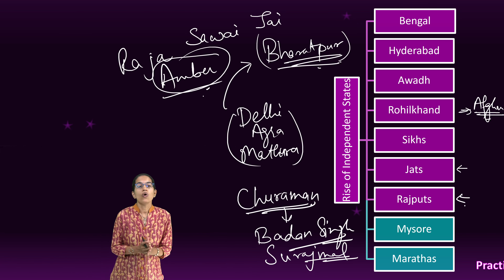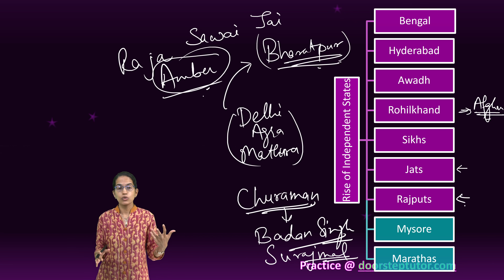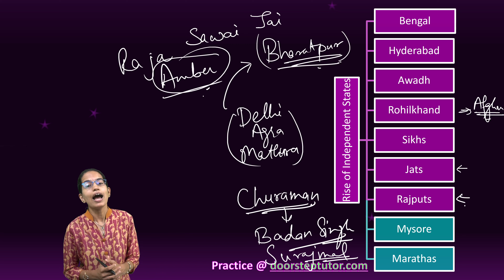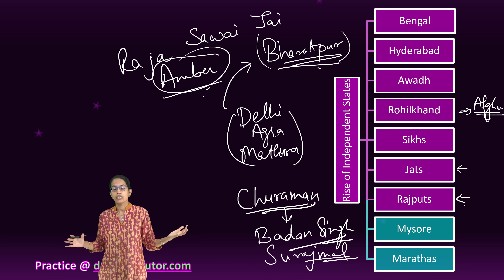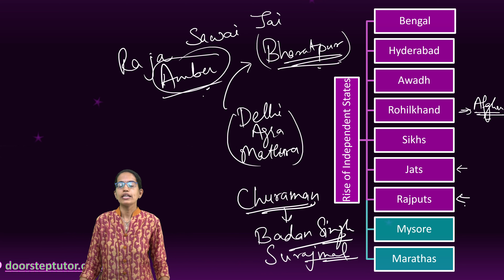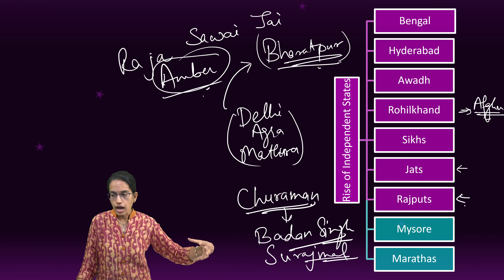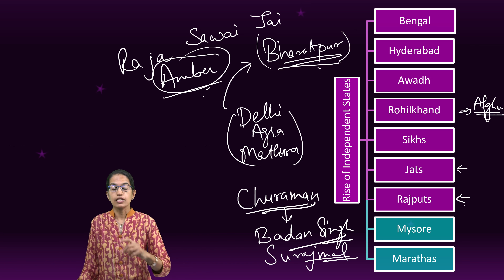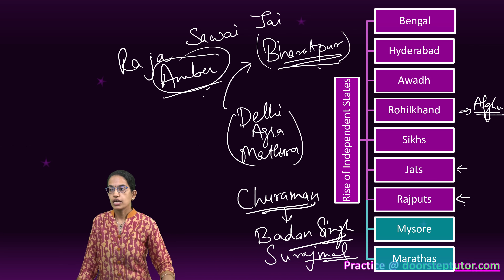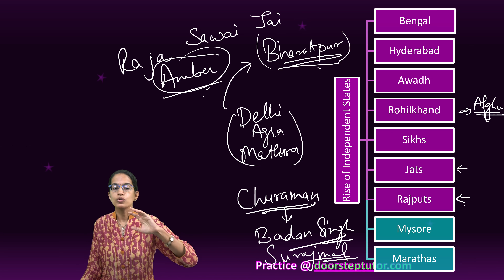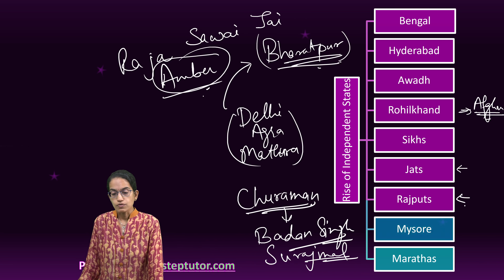Raja Jai Singh was exceptionally good as a social reformer and also a scientist. He built numerous observatories, most of them in the regions of Varanasi, Mathura, Delhi, Agra and Jaipur itself. Jantar Mantar was also built — it was a milestone of Raja Sawai Jai Singh. Those were the contributions of Raja Sawai Jai Singh.